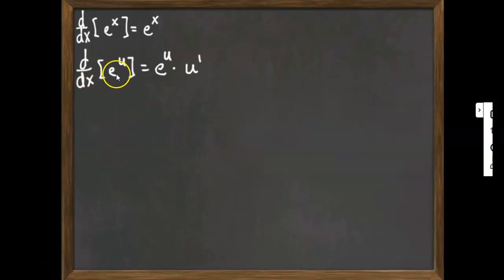Of course, in terms of the chain rule, if you have e to the u, where u is some function of x, then by the chain rule, it would be that thing, derivative of e to the u, which would be e to the u, times the derivative of the exponent, u prime.